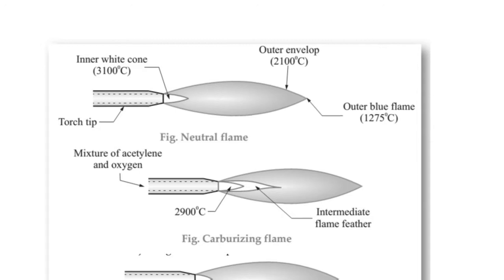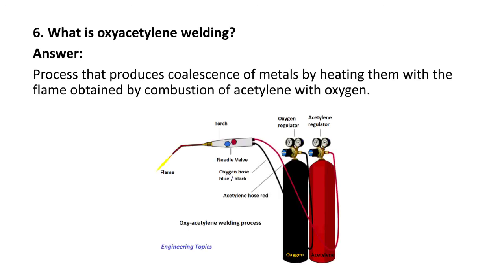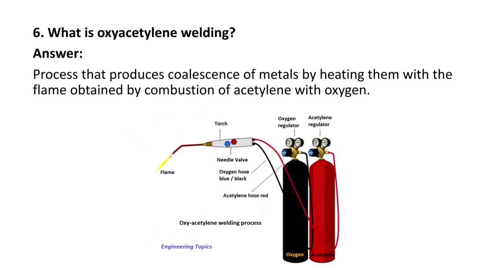Next question: what is oxy-acetylene welding? It is a process that produces coalescence of metals by heating them with a flame obtained by the combustion of acetylene and oxygen. You have two cylinders — one oxygen and one acetylene. The two are mixed in proper proportions, combustion produces heat, and that heat is utilized for melting and joining the plates. That is known as oxy-acetylene welding.